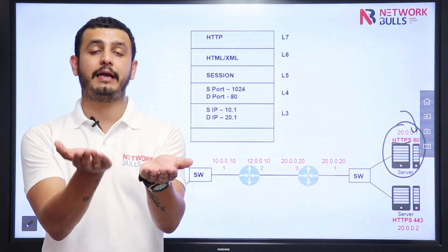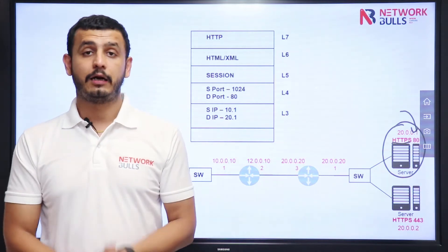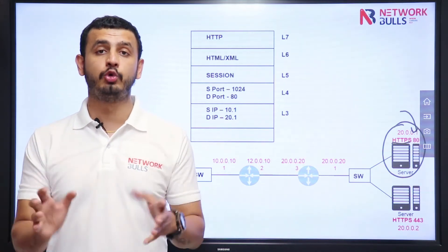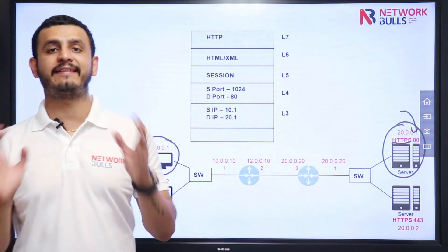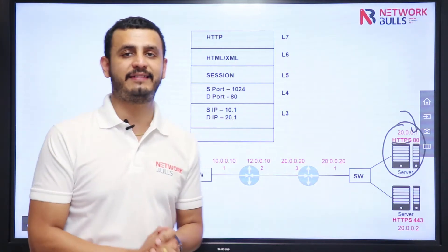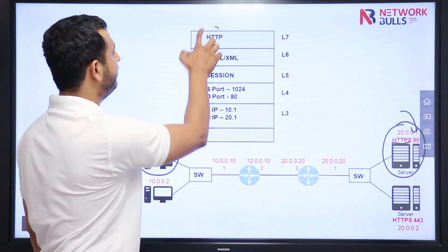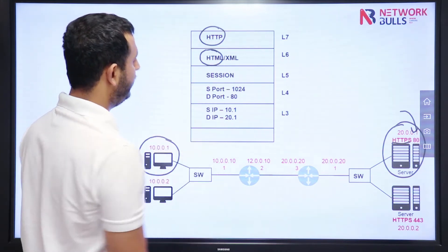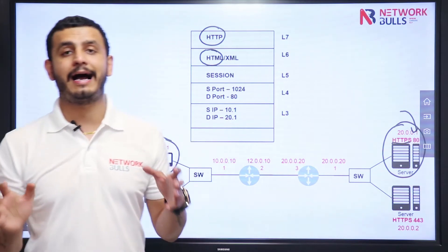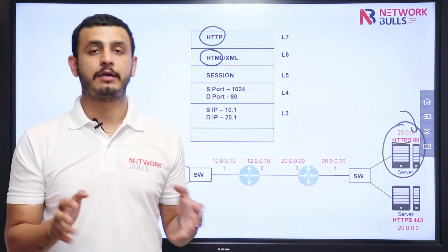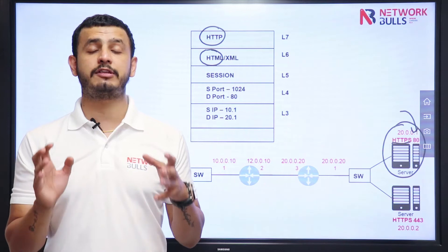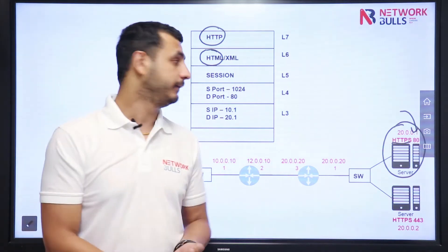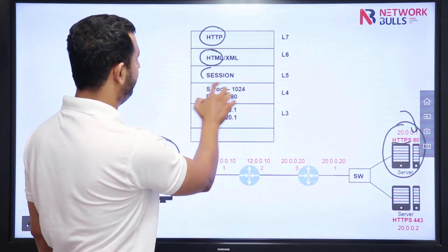But what are the addresses that are used at network layer? Let's have a look step by step. At Layer 7 it will be HTTP. At Layer 6 it will be HTML. HTML stands for Hypertext Markup Language—it is also a language used for web designing. At Layer 5 there will be a session number for the request, let's say session number is 1.